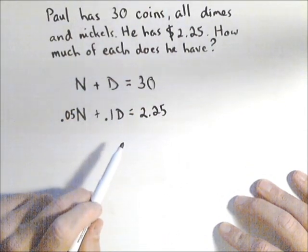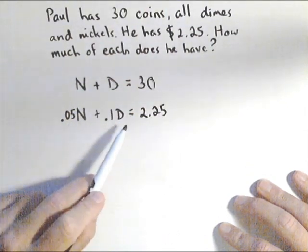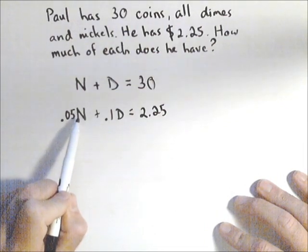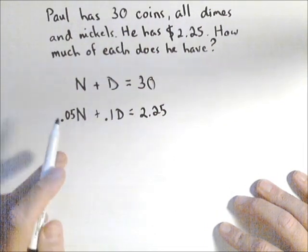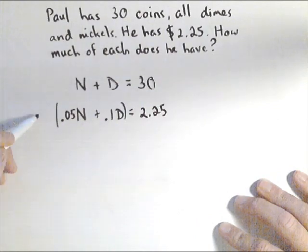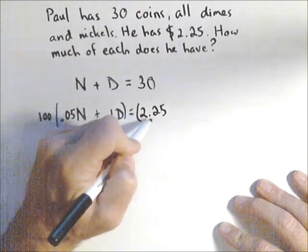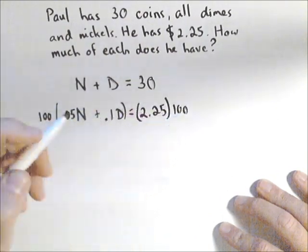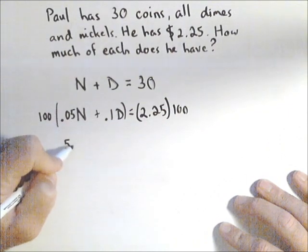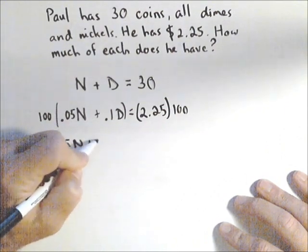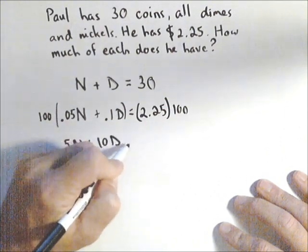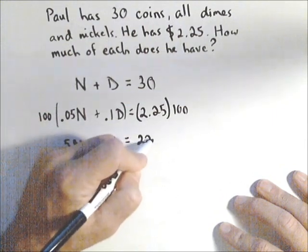Now one thing you could do, because sometimes you don't want to deal with decimals, is you can actually multiply through this bottom equation, multiply everything by 100. Because that gets rid of our decimals, and we end up with 5N plus 10D equals 225.